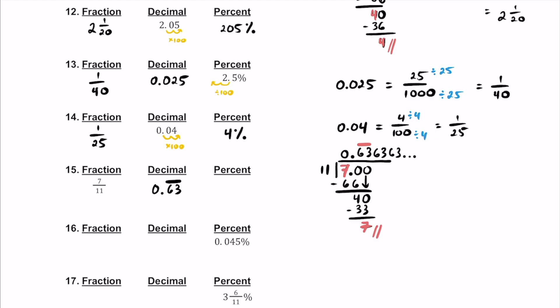When writing the percentage, please be careful — we'll move this twice to the right, multiplying by 100. So the percentage here is going to be 63.63 repeater percent. Or we can write this as 63 and 7 elevenths percent. These are equivalent to each other.